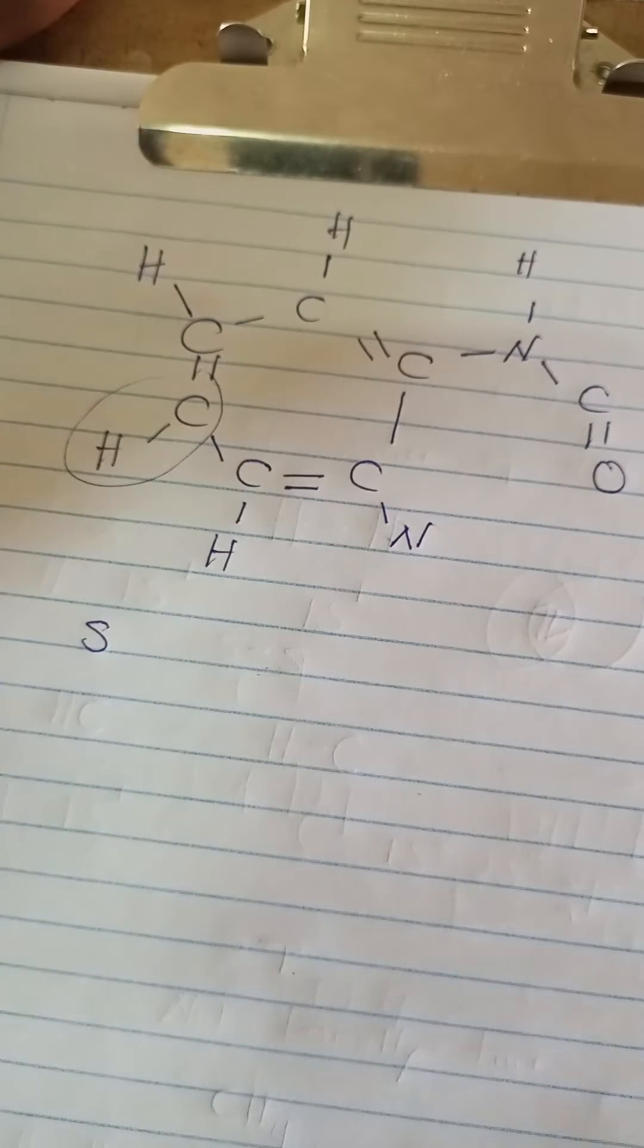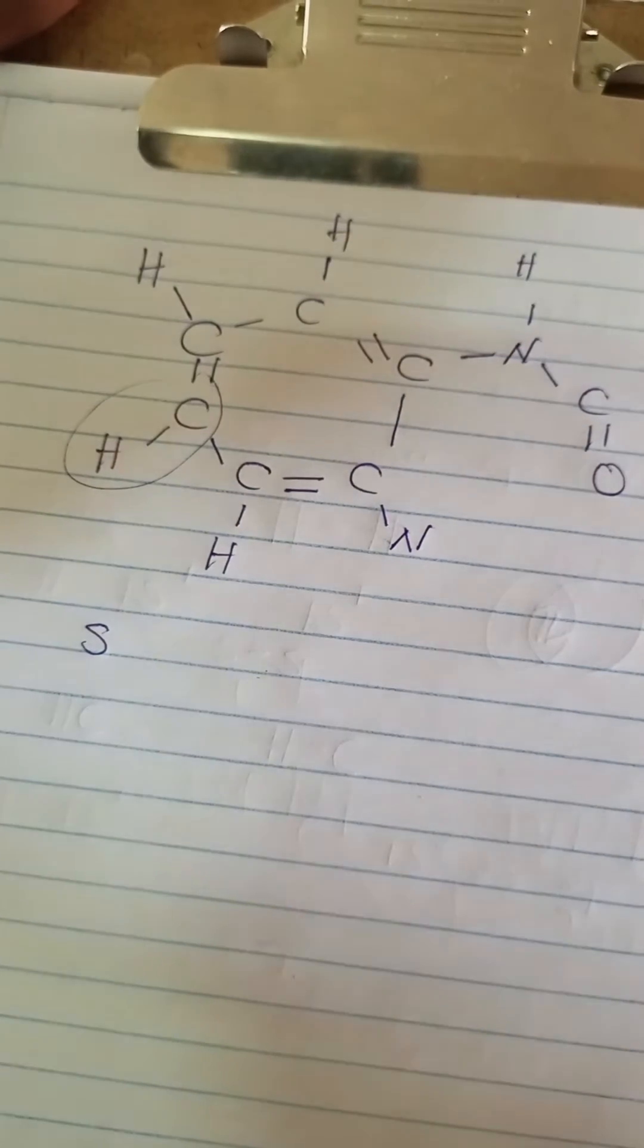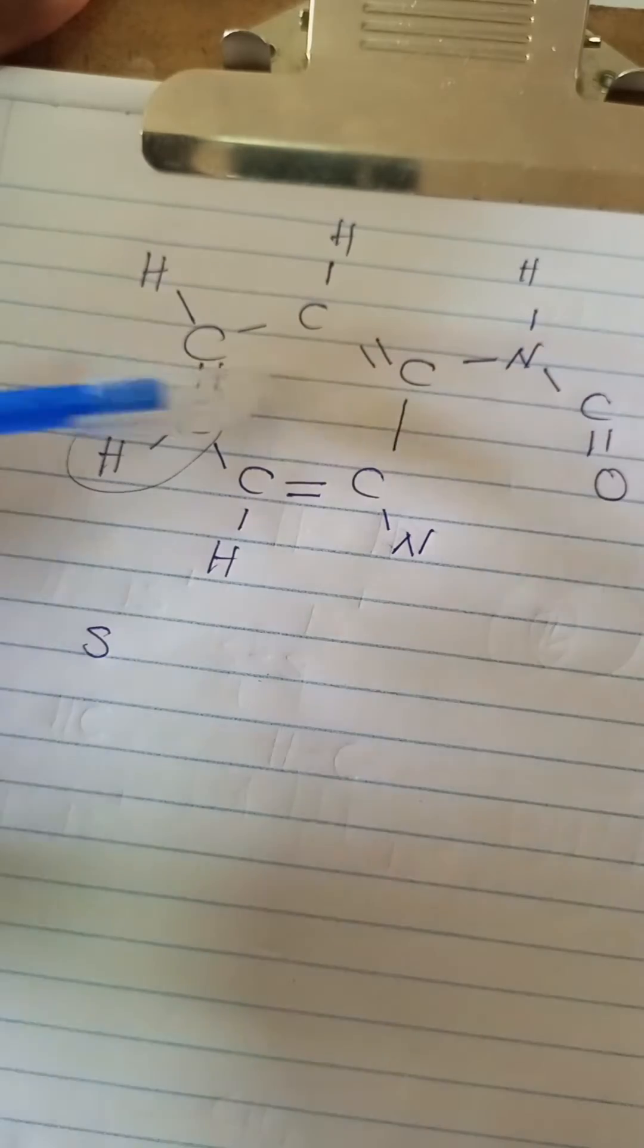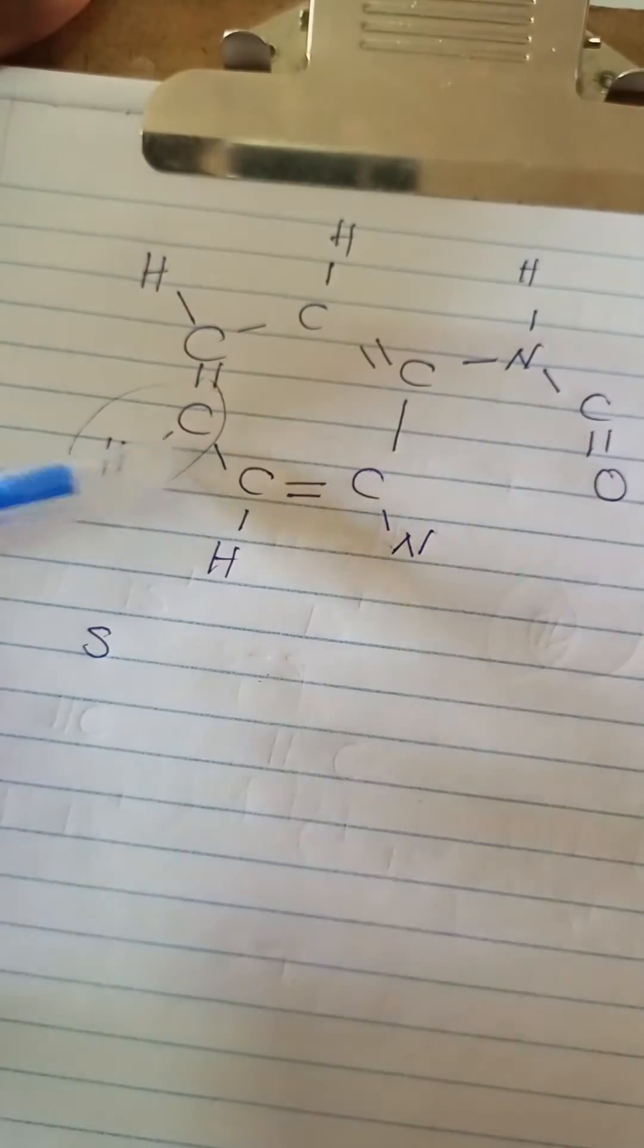You count the number of connections. So is that one - so you count the double bond as one. So one, two, and three. So the carbon is actually sp² - the carbon is sp² hybridized.